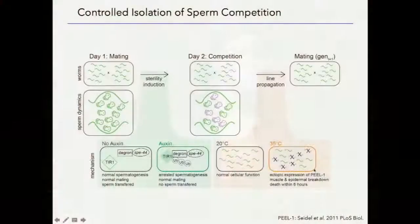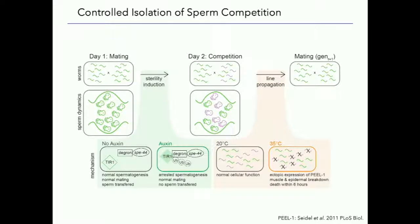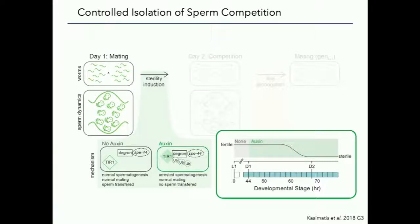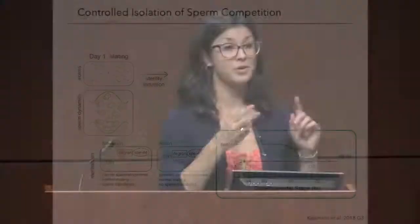Designing this required two genetic tricks — the lethality had been shown before, but designing the sterility induction system was actually quite challenging and something I'm very proud of. Looking at one set of time series data: developmental stage is on the x-axis, from hours or larval stage one through day one adult and day two adult. Blue shows where spermatogenesis is happening. If worms are raised on normal media throughout larval development, they'll be fully fertile. But if you transition them to auxin-containing media at day one of adulthood, all males are fully sterile within 24 hours. And if you take these sterile males off auxin, they will regain their full fertility. So this is the first external, inducible, non-toxic, reversible sterility system in an animal.